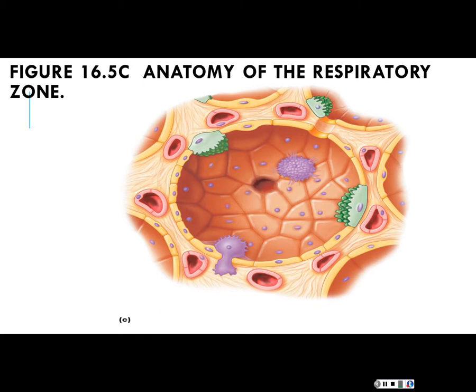Zooming in at a single alveolus — there are some unique cells. The first are the type 1 alveolar cells. They form a barrier and also do the respiratory part — the diffusion of gases. Type 1 cells make up the structure of the alveolus and do the gas exchange with the pulmonary circulation. They're colored yellow in this diagram.